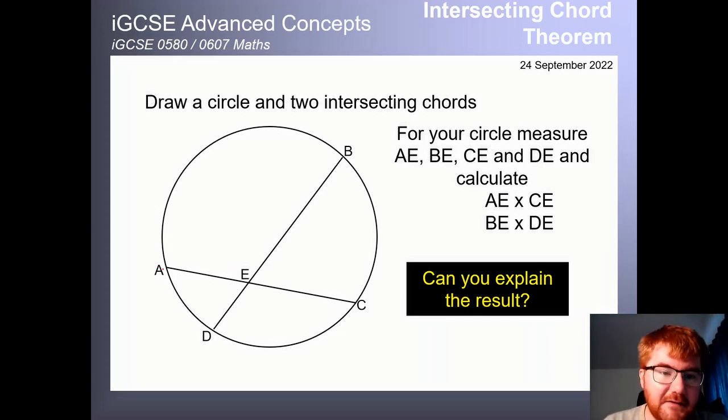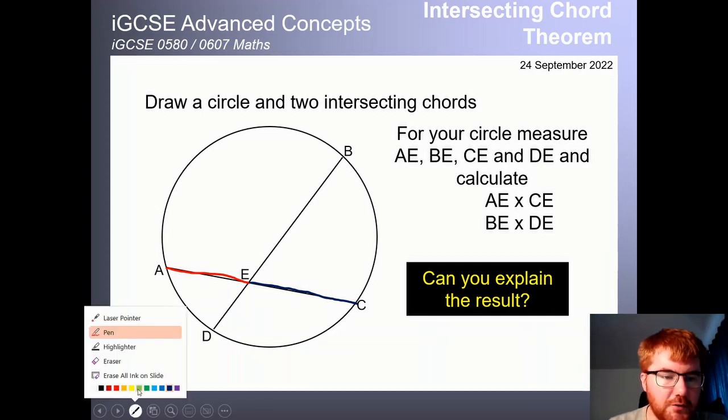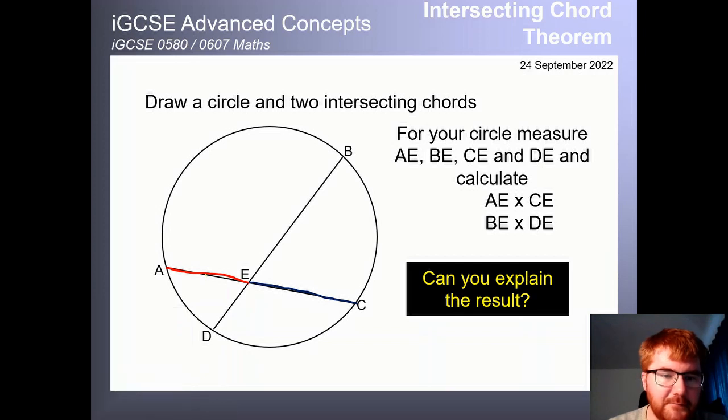I want you to calculate AE, so if I highlight this in red here and times that by EC, so let me highlight that in a different colour, so in blue, then there's a relationship between when they're multiplied together and comparing it to the equivalence with the other chords. So if I do this in yellow, like so, if I multiply this yellow line and let's make this a darker blue line, like so, if you multiply these together, what will happen is these two things are actually equal to each other.